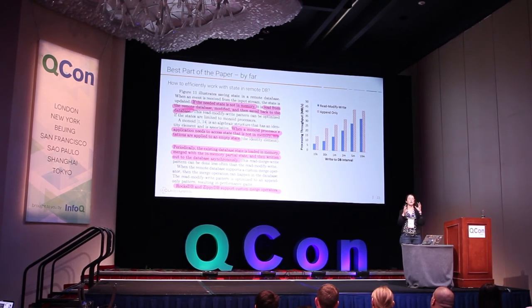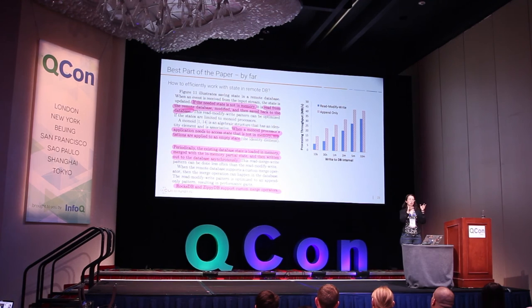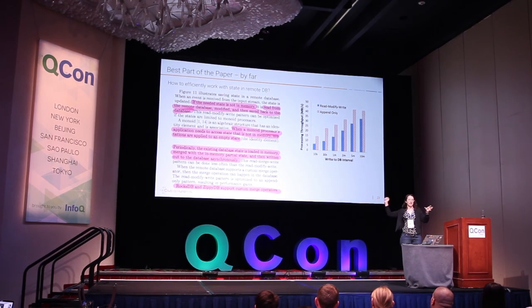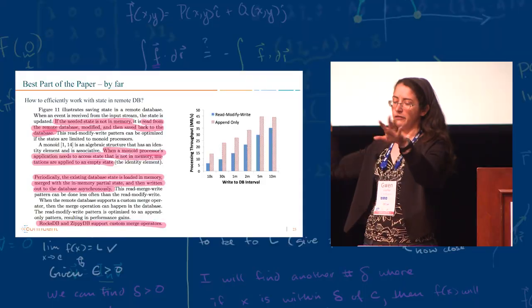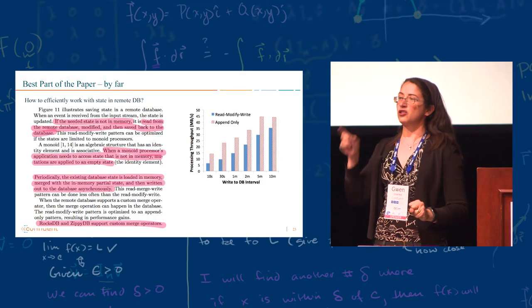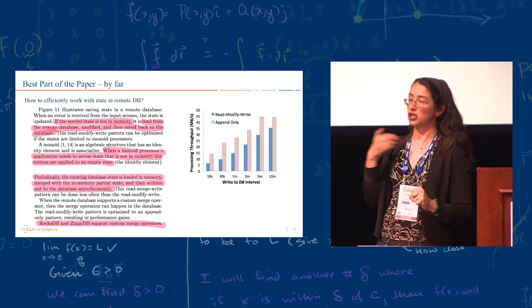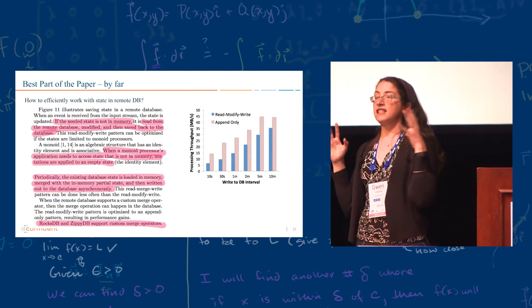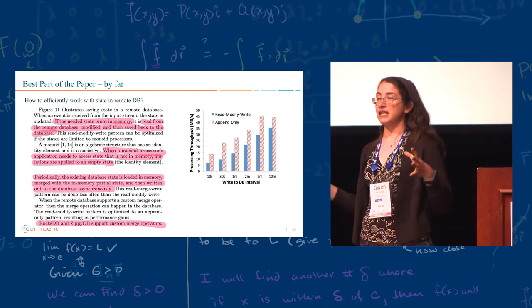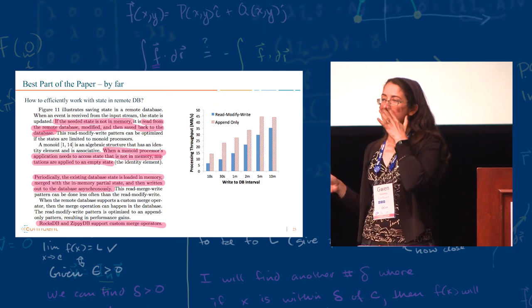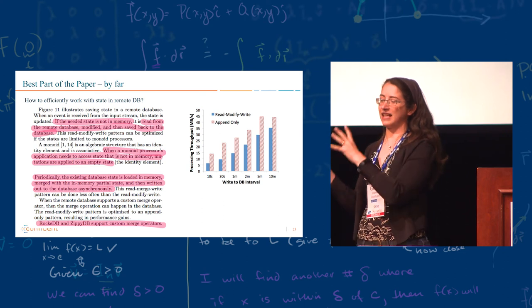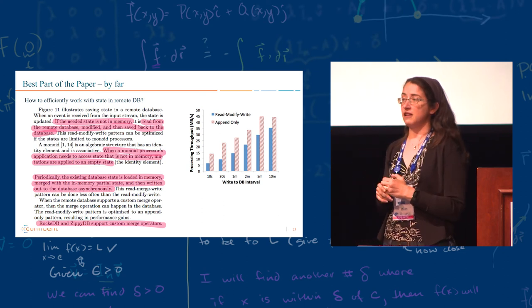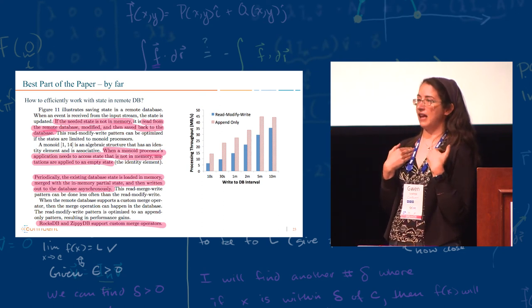So instead of saying, oh, I need to make a change, but I don't have the state. Let's go to the database, wait a few milliseconds, get it. Now we made a change. Now we write it back. They say, oh, I don't have the data. No problem. I'll just continue and figure it out later. If this wasn't cool enough optimization, which in my opinion is cool enough optimization, because they wrote their own database, they made the merge operation much more efficient in the database. So they actually have a database that natively supports this kind of merge.